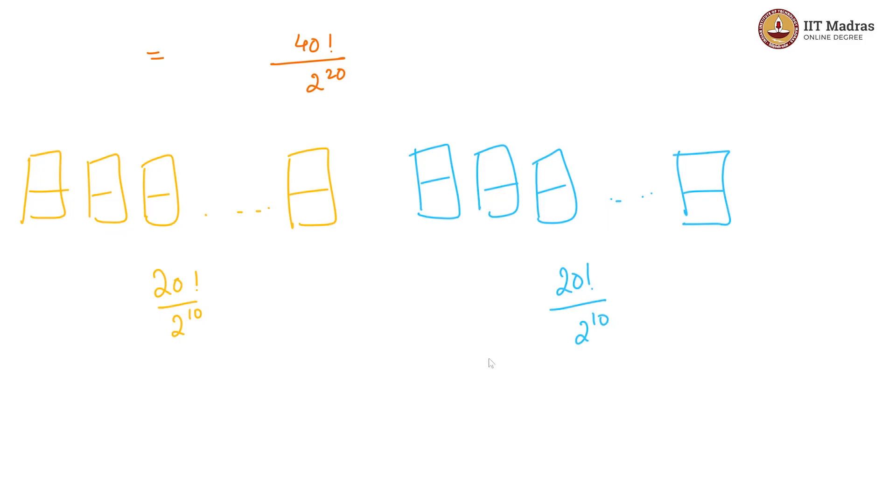However, how we choose the rooms also should matter. So, we will be getting 20! / 2^10 × 20! / 2^10 × 20C10.